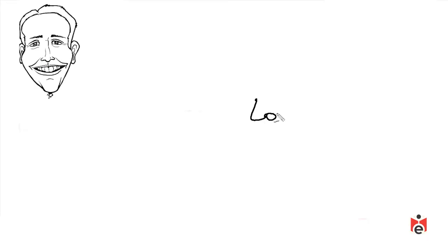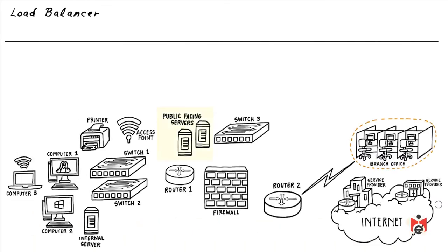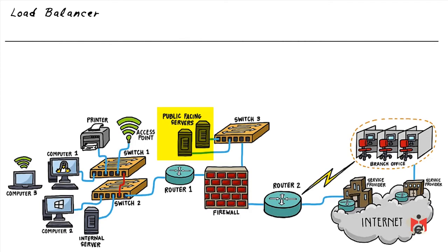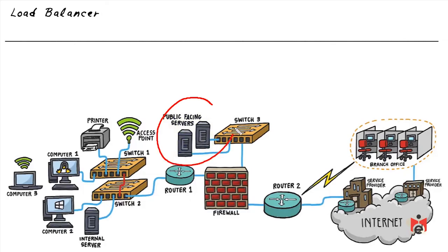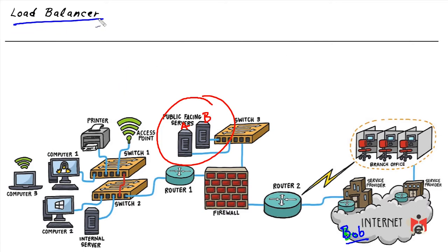If a web server gets too busy and has too much load, it can slow down and become unreliable. To compensate, instead of one web server we can have multiple servers with identical content — server A and server B. A user like Bob on the internet could be sent to either server. The magic behind that routing decision can involve a device called a load balancer placed in the path between the user and the servers.